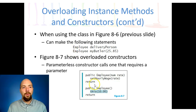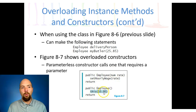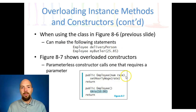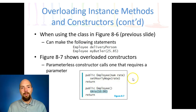If we say employee delivery person with no specified value, their wage defaults to $10. But if we say employee my butler with 25.85, there's an overloaded method that matches: if a number comes in, run this one — call it rate, then set the hourly wage to rate.